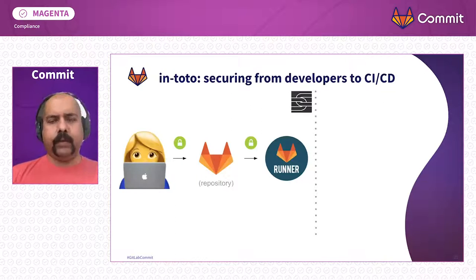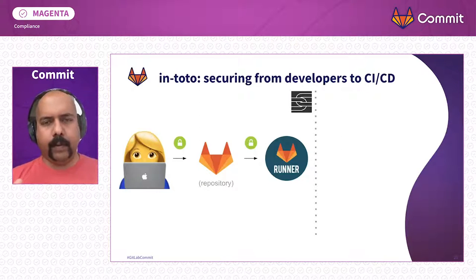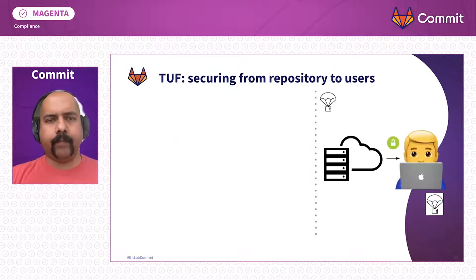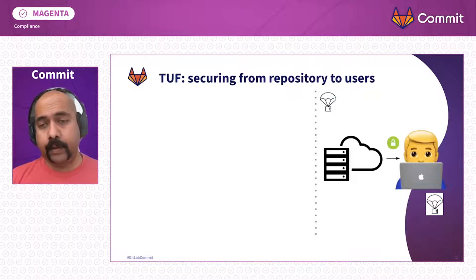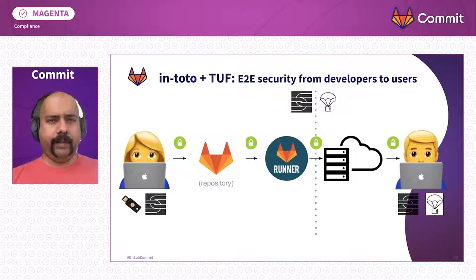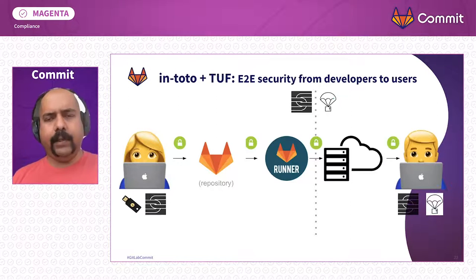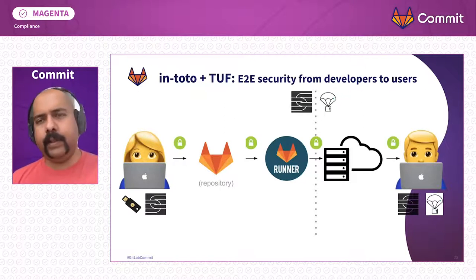One piece of the puzzle is In-toto, which secures the distribution of your source code and packaging in your pipeline — all the way between the developers and your CI/CD. TUF is the tool that solves the other half: the secure distribution of your packages from your package repository to your end users. Put the two together and you get end-to-end security, which lets you detect attacks anywhere between your developers and end users. The good news is that these tools exist today.